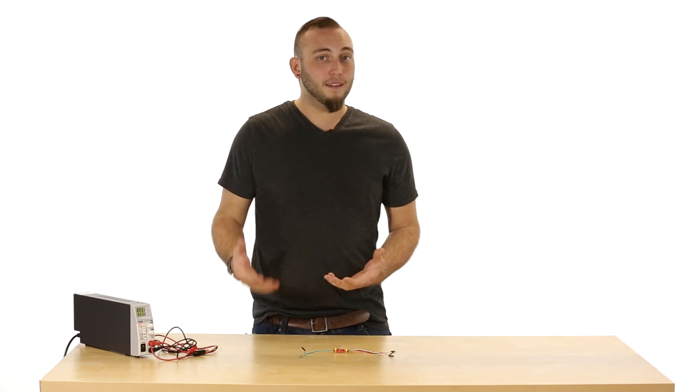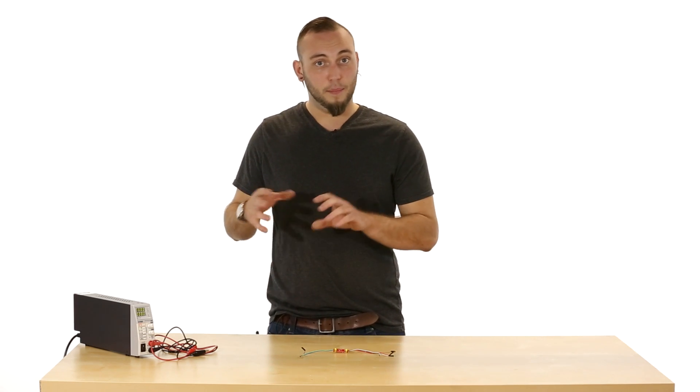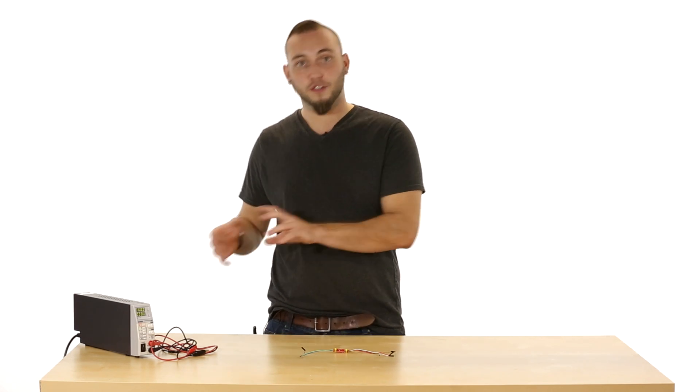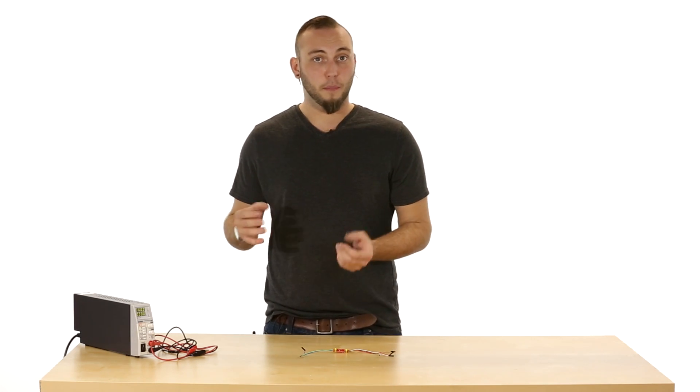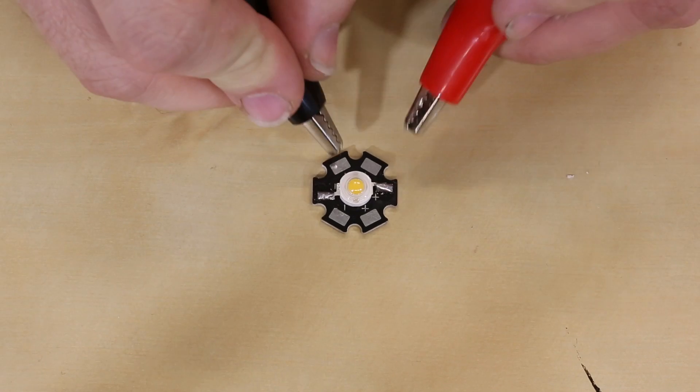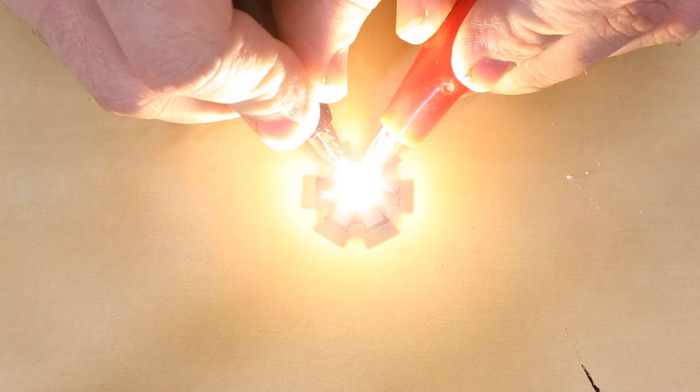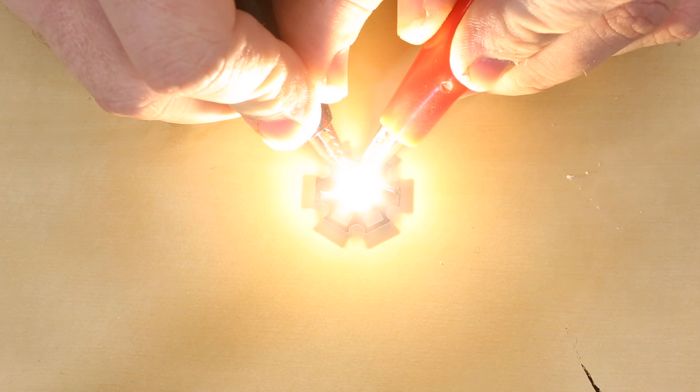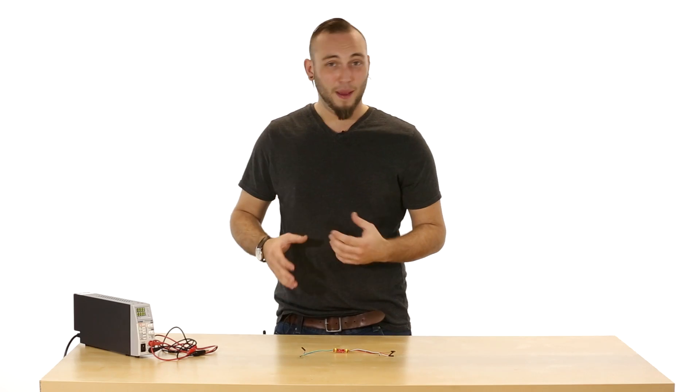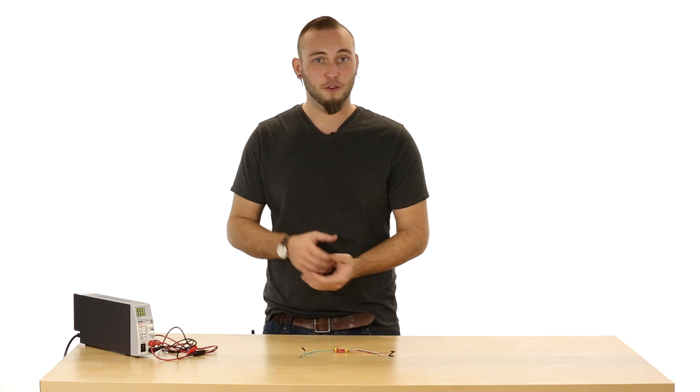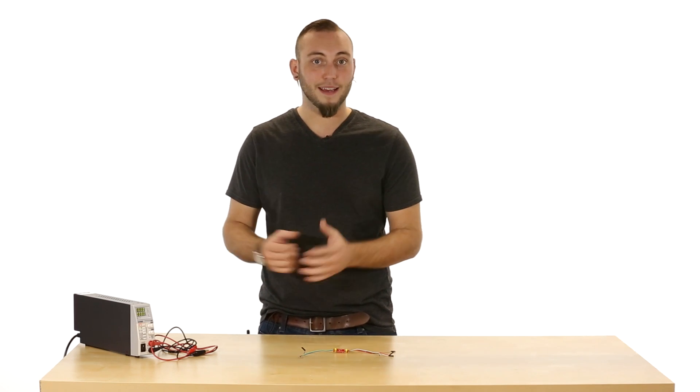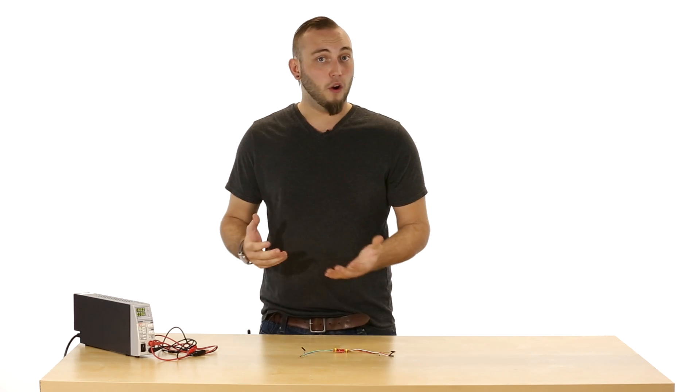So what that means is if you had a battery, and a battery is a constant voltage supply, not a constant current supply, that was the perfect voltage, then you could hook up an LED to it. But most batteries come in a set number of voltages and LEDs are powered at strange voltages like 2.4 or 3.6. So that's a hard thing to find.